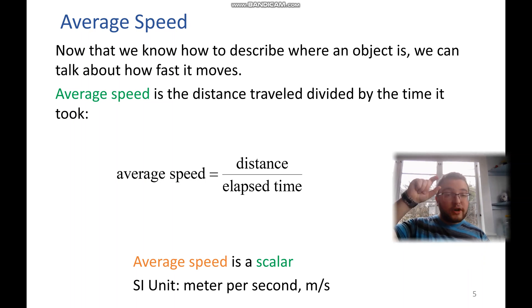And if we look at our formula, we have distance in the numerator, so meters in the numerator, divided by time in the denominator, so seconds in the denominator. That means that our SI unit is meters divided by second, or the meter per second.